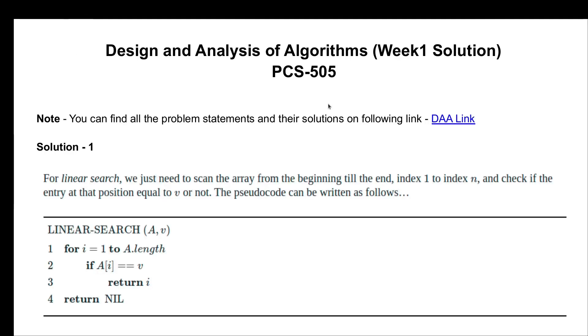Let's go to the pseudo code of this algorithm. Here is the solution of linear search. You can find out all the problem statements and their solution on this link and this file you will find on my github profile. For linear search we just need to scan the array from beginning till the end and we'll be starting with index 1 and we'll go up to n and check if entry at each position is equal to key element or not.